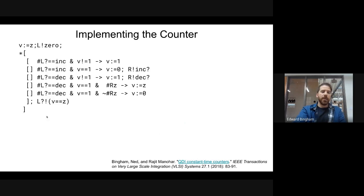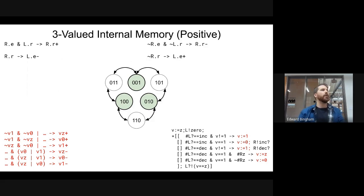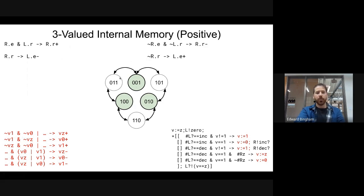Now we have the CHP specification dynamic single assignment for the counter. It uses exchange channels on both the forward drivers and the input requests, and a one-of-three encoding on the internal memory. We'll use a three-valued internal memory. We have two input requests, two input enables, two output requests, and two output enables. Let's start with a weak condition half buffer to give us some structure. Then the first thing we need to do is think about the internal memory — we're going to use a three-valued positive nlatch, with VZ, V0, and V1. Valid states are when one is high; neutral states are when more than one is high.